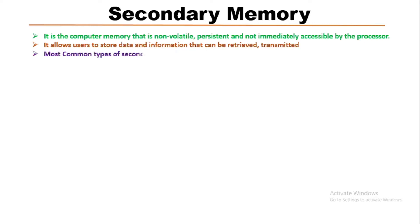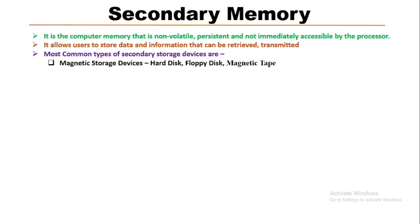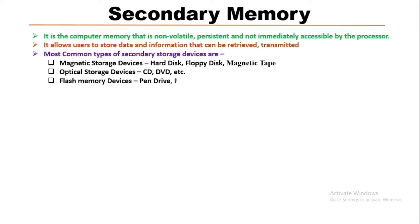The most common types of secondary storage devices are magnetic storage devices like hard disks, floppy disks, and magnetic tapes; optical storage devices like CD and DVD; and flash memory devices like pen drives and memory cards.